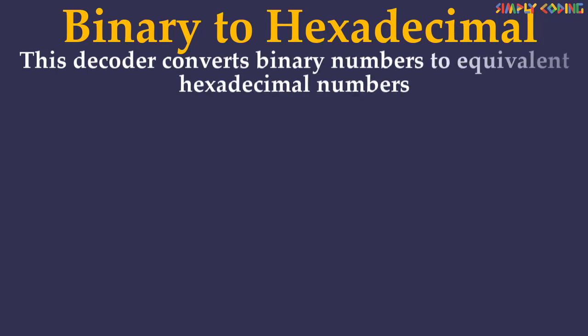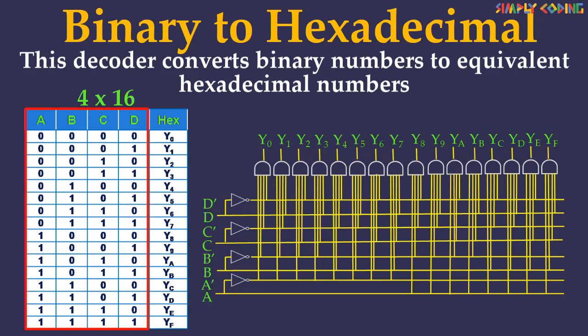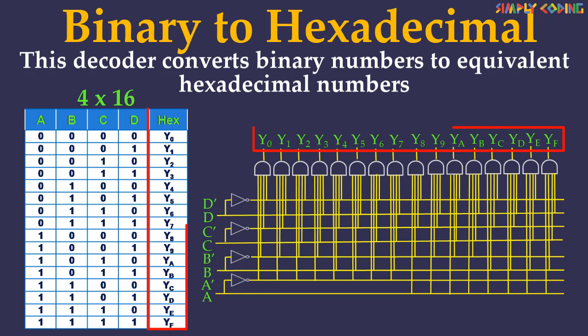Now let's see the binary to hexadecimal decoder. A decoder which converts a binary number into its hexadecimal equivalent is known as a binary to hexadecimal decoder or 4-to-16 decoder. This is because hexadecimal number has 16 digits from 0 to F, and each number is represented in binary using 4 bits. If we draw the truth table for this, we will have different combinations of 4 inputs for which one of the 16 output lines should be high. If all A, B, C, D are 0, then Y0 should be high. When A, B, C are 0 and D is 1, then Y1 should be high, and so on. For this we create the logic circuit diagram, taking in the 4 inputs as per the truth table and ANDing for each of the outputs. This is the logic circuit diagram for binary to hexadecimal decoder.